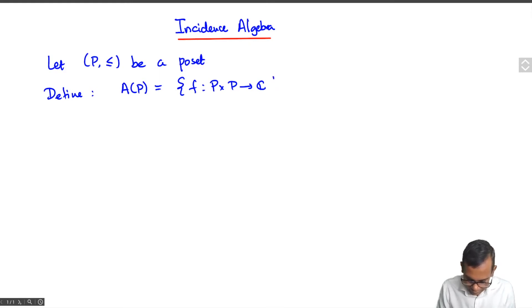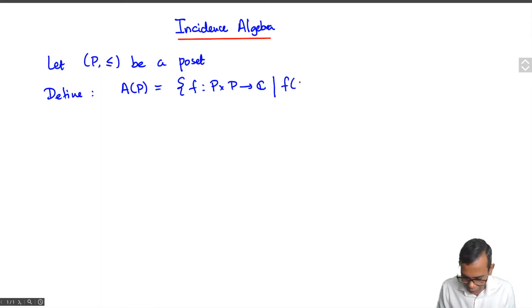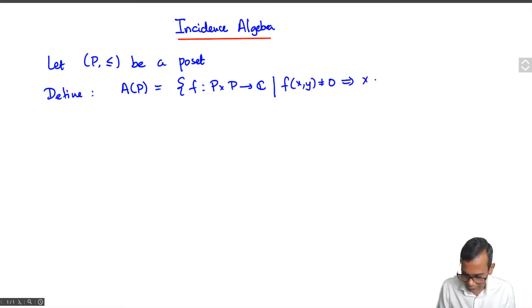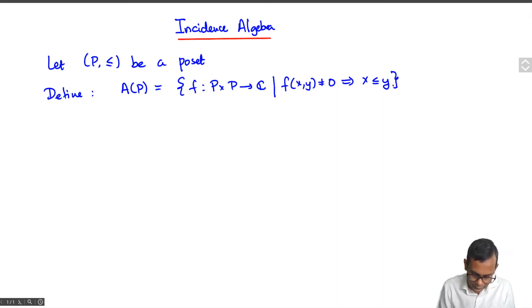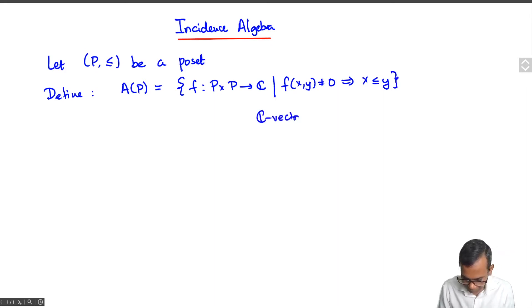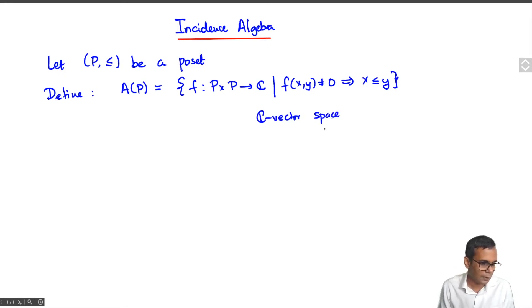There is an additional condition on these functions: if f takes a non-zero value at (x, y), then we need that x ≤ y in the partially ordered set. So A(P) is a ℂ-vector space under pointwise addition.